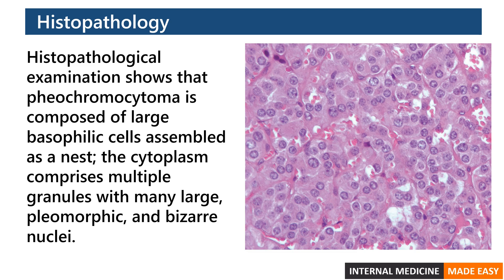Histopathological examination shows that pheochromocytoma is composed of large basophilic cells assembled as a nest. The cytoplasm comprises multiple granules with many large pleomorphic and bizarre nuclei.